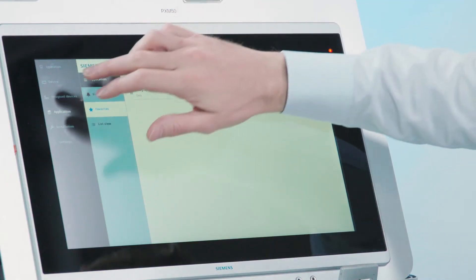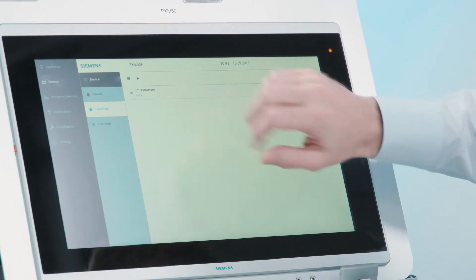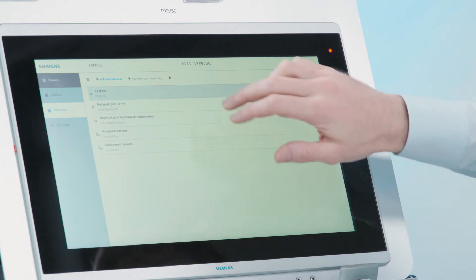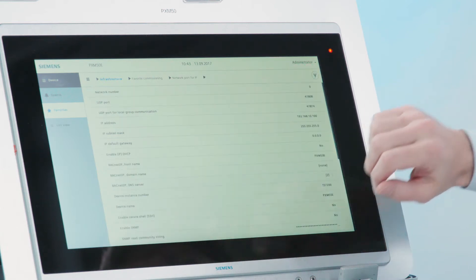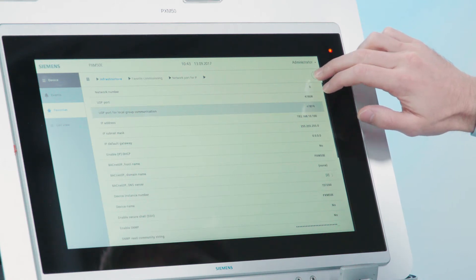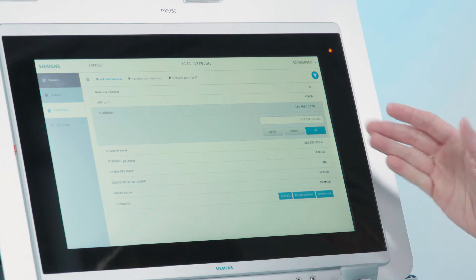For the IP address, you need to navigate to device, from there to infrastructure, to favorite commissioning. And there you see the network port for IP, where you can shorten the list of settings via this filter button in the top right corner. And there is your IP address right there for you to edit.